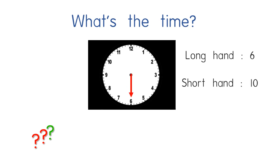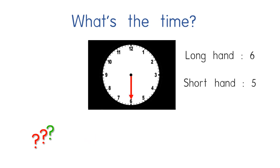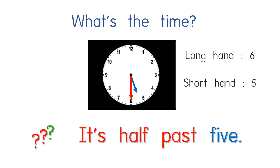Let's look at this example. The long hand is at number 6 and the short hand is 10. So what's the time? Good — it's half past 10. One more example: the long hand at number 6 and the short hand at number 5 and a half. So what's the time? It's half past 5. You have to look at the short hand — it shows the hour, menunjukkan masa jam. So we say it's half past 5.